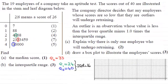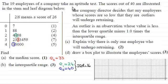Hi there. Before I do part C and D, I just want to remind you what I did in a previous video and about the question. We were given that 19 employees of a company took an aptitude test and the scores out of 40 are illustrated in the stem and leaf diagram here.